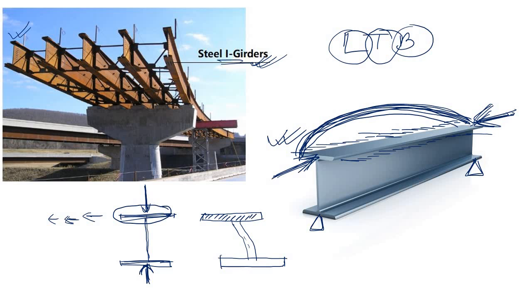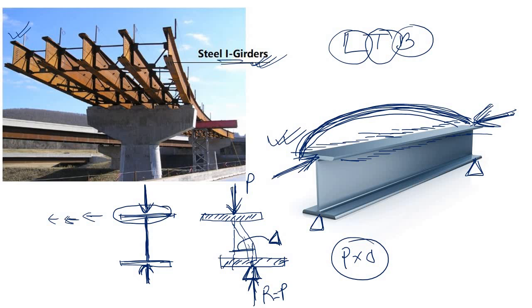Now the top flange is here and the bottom flange is here — they have shifted. The load P is applied at the top flange position, but the reaction P comes from the bottom support, and there is a lateral offset delta between them. This creates a torsion equal to P times delta. Due to this torsion the whole I-section simply rotates.